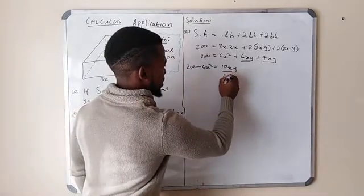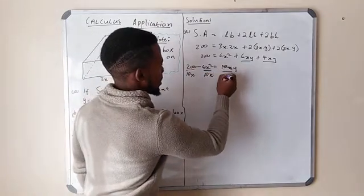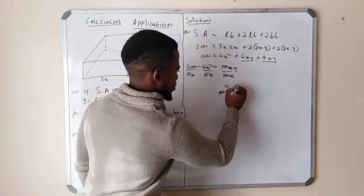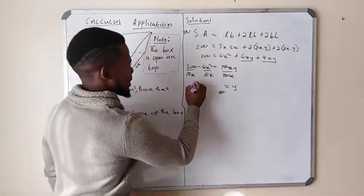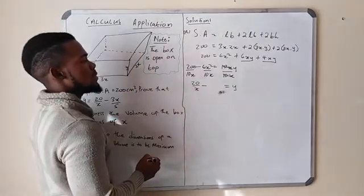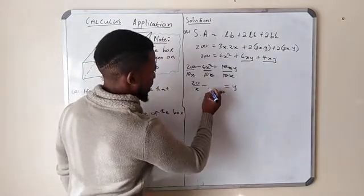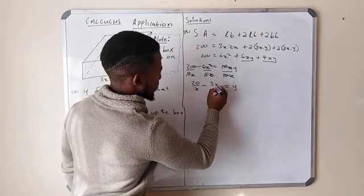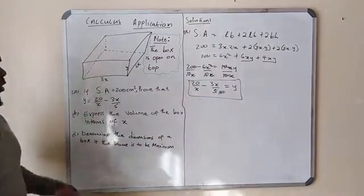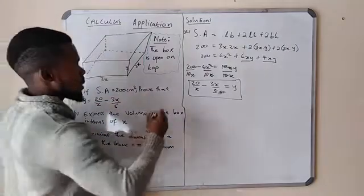We divide both sides by 10x: y = (200 − 6x²) / 10x. This gives y = 200/10x − 6x²/10x = 20/x − 3x/5. We have proven that y = 20/x − 3x/5.